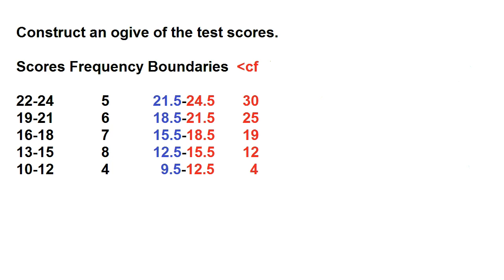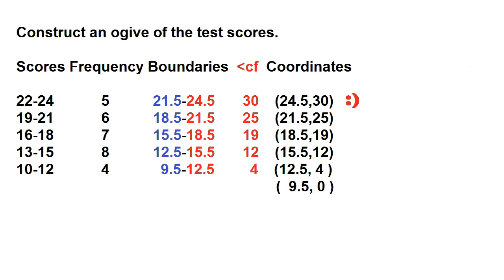Let's add a column for the coordinates of the less than ogive. How many students got scores less than 24.5? The answer is 30. The coordinates are: (24.5, 30), (21.5, 25), (18.5, 19), (15.5, 12), (12.5, 4). We also include the lower boundary of the lowest class interval, which is 9.5. How many students got scores less than 9.5? The answer is 0.